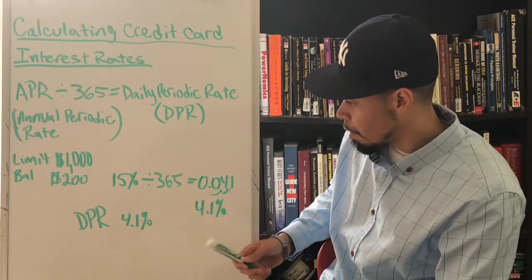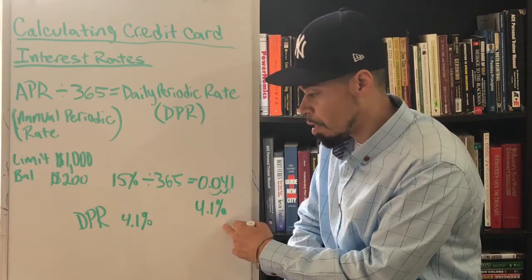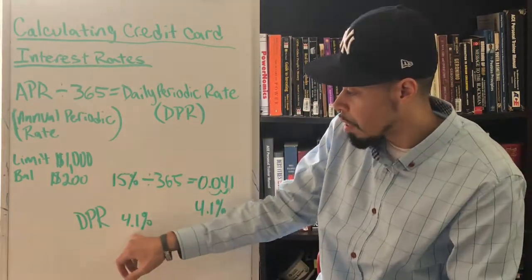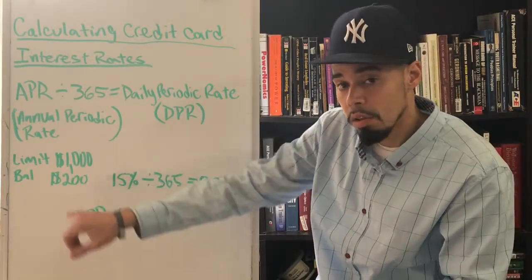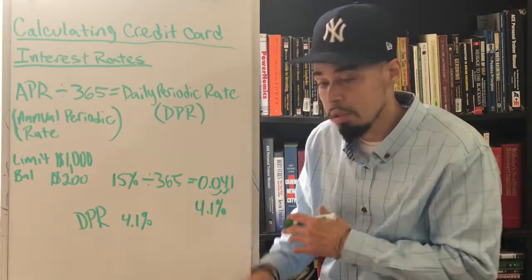So your DPR, daily periodic rate, is 4.1 percent. So every day you'll be paying 4.1 percent on that $200 that you owe.